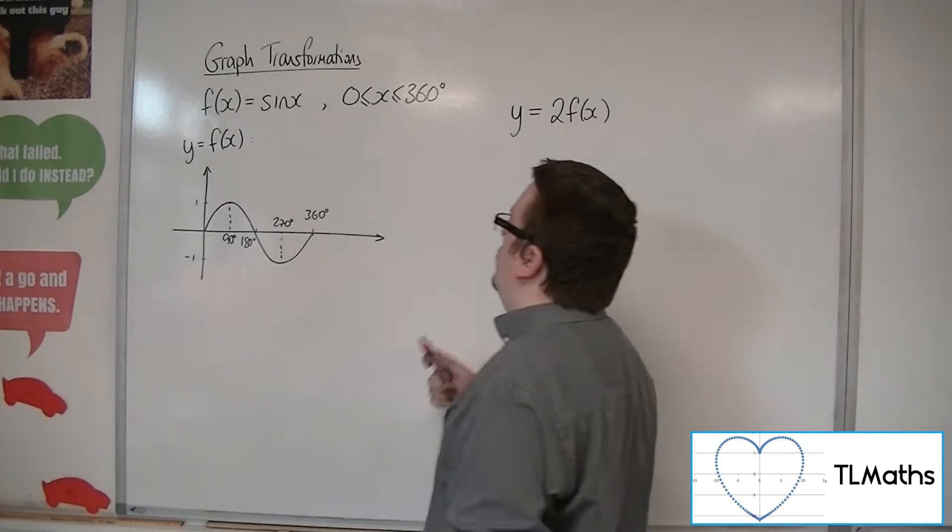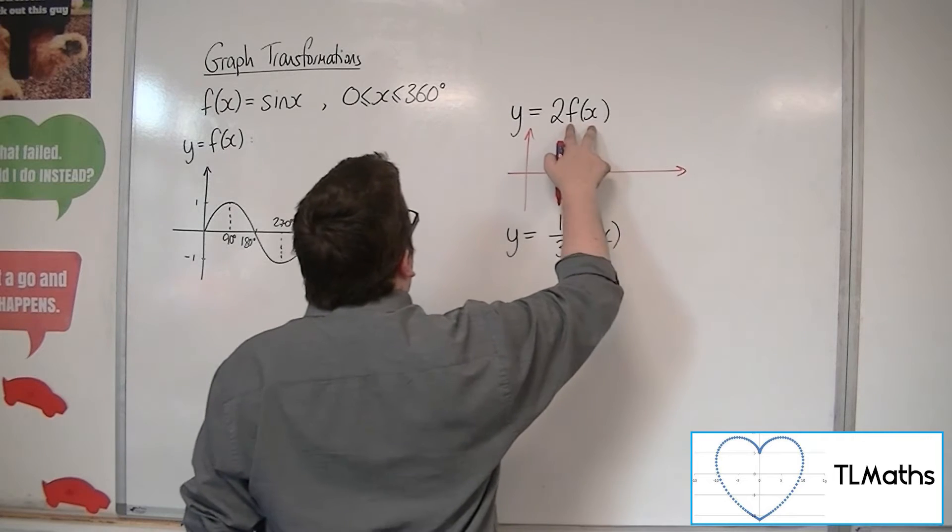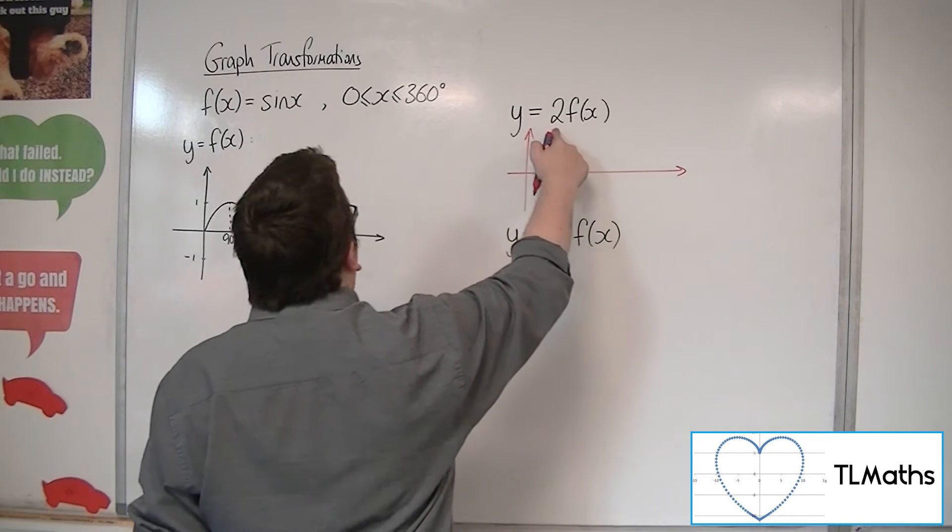What we've got here is taking the y coordinate of each of the points and doubling it.